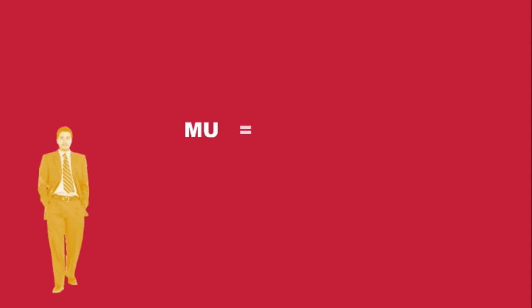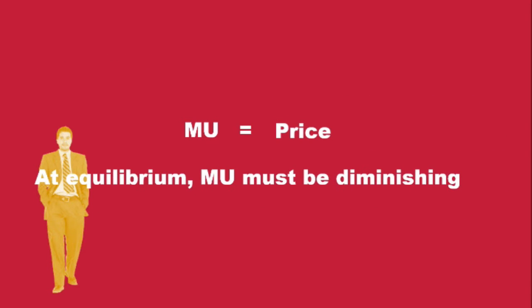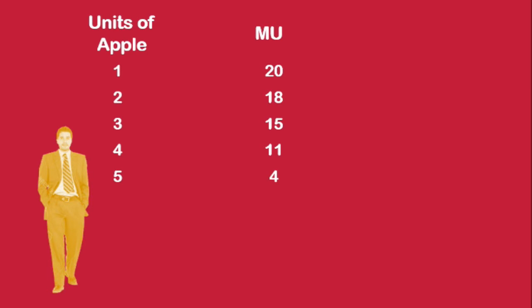Condition 1: Marginal utility is equal to price. Condition 2: At equilibrium, marginal utility must be diminishing. We shall use the utility schedule developed earlier to understand consumer equilibrium.